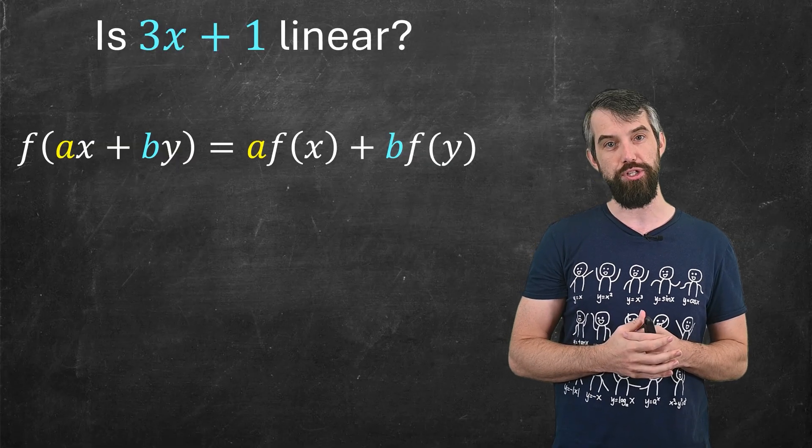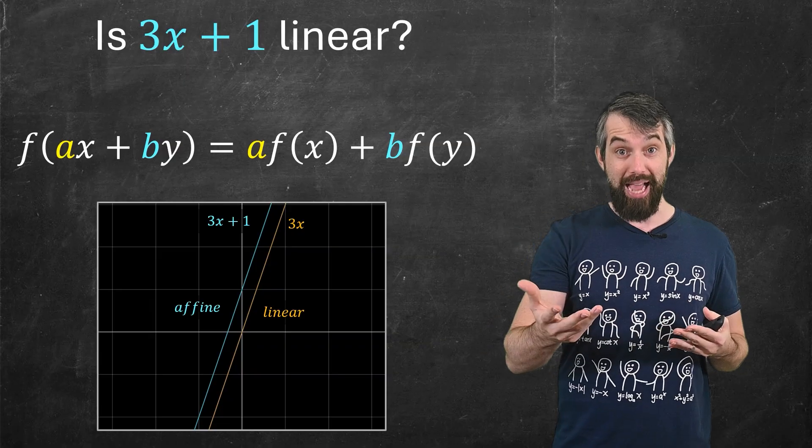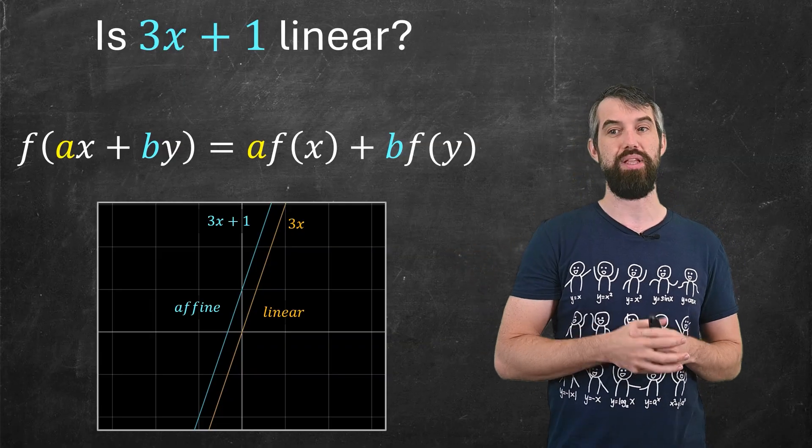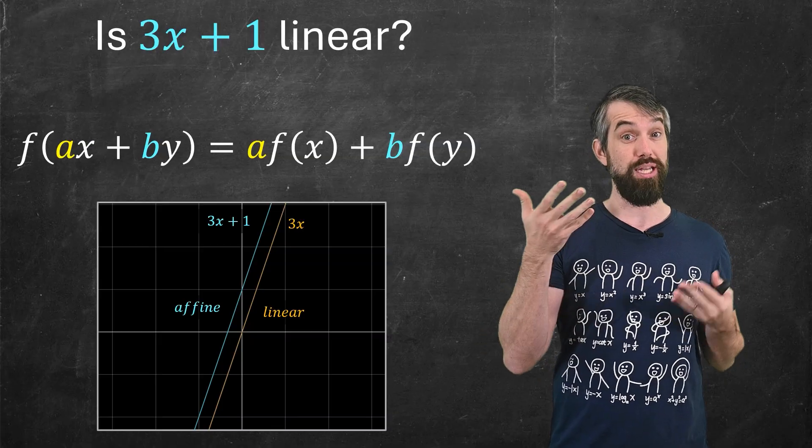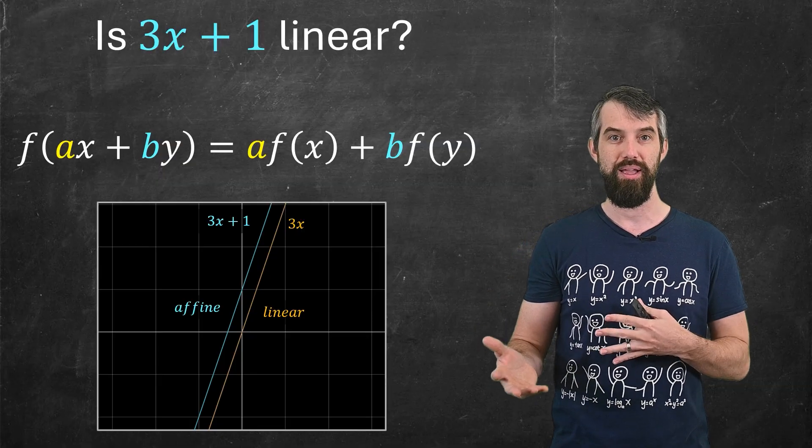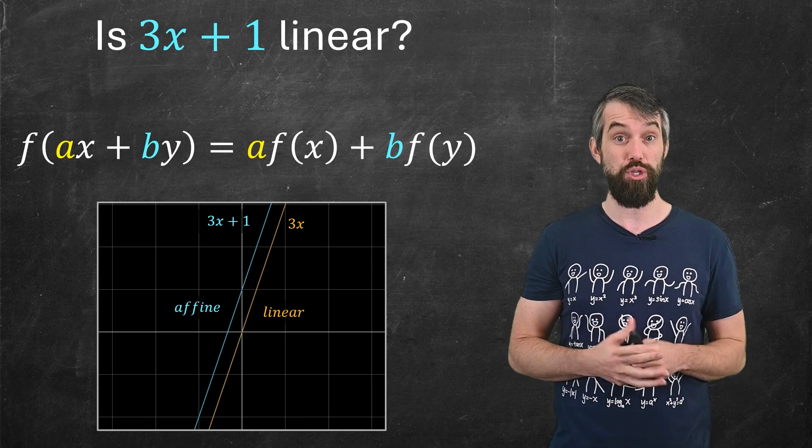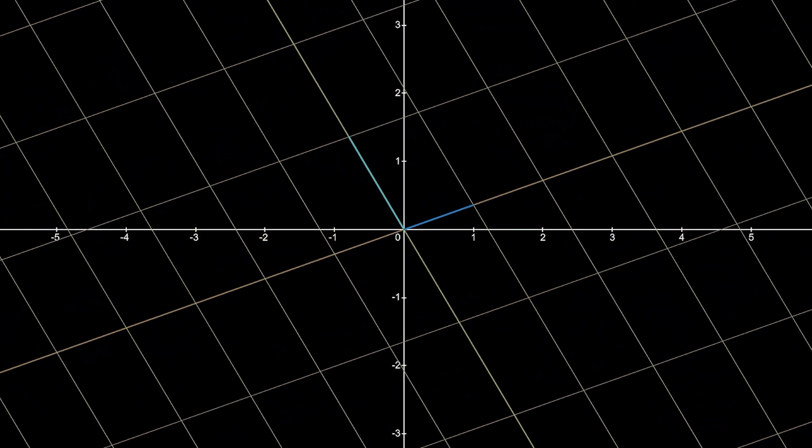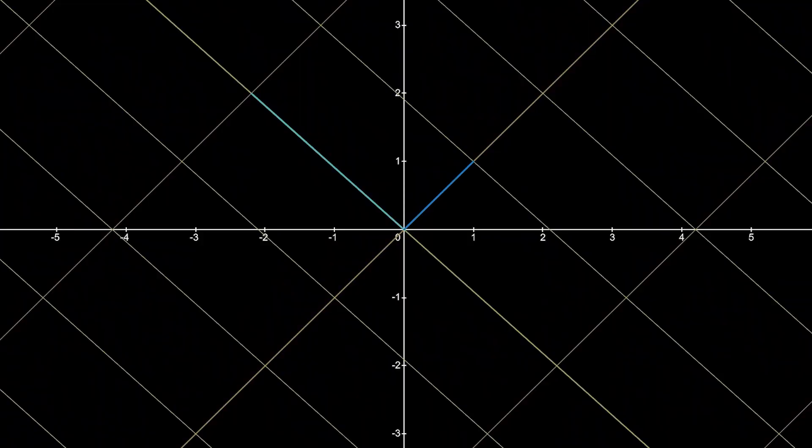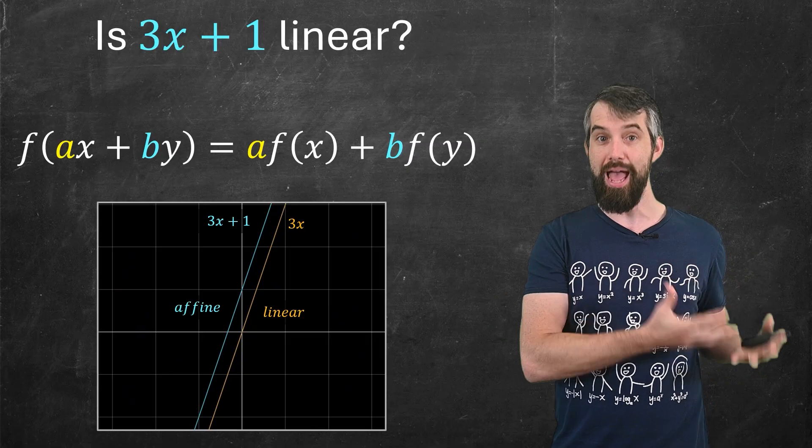And the terminology that you might use here is that something like 3x, which does go through the origin and does satisfy this property, is linear. And then 3x plus 1, which is sort of like linear but then shifted, is an affine transformation. In the subject of linear algebra, we really study this algebraic property in a lot of detail. We can generalize this, for example, to a higher number of dimensions and talk about linear transformations of a plane or three-dimensional space. There's a lot of really lovely work and primarily you're focused on that concept where it's linear and not affine.